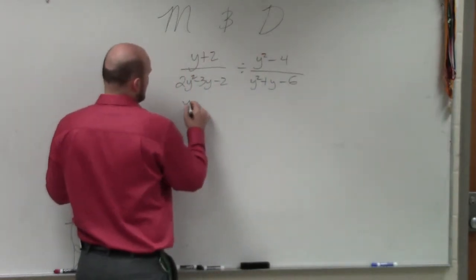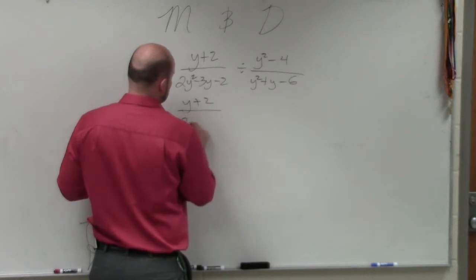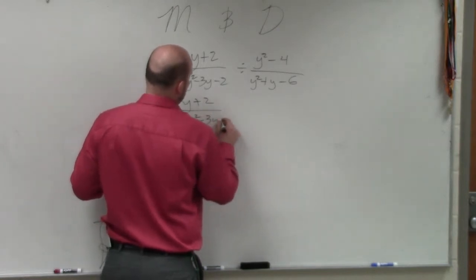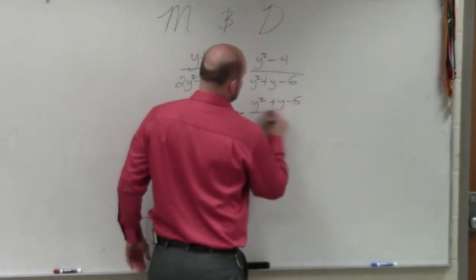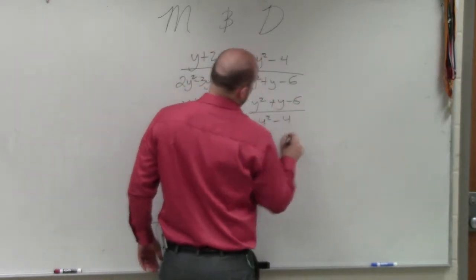Now, I'm going to write y plus 2 divided by 2y squared minus 3y minus 2 times y squared plus y minus 6 divided by y squared minus 4.